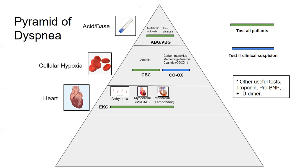How about a 30-year-old woman with dyspnea for the past two months, a very loud P2 on exam, and some clubbing? Pulmonary hypertension. How would you work that up? What's your first test when you think someone may have pulmonary hypertension? An echocardiogram.